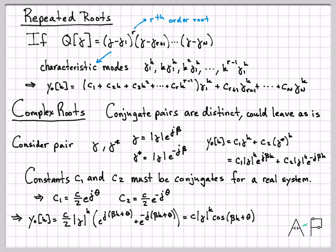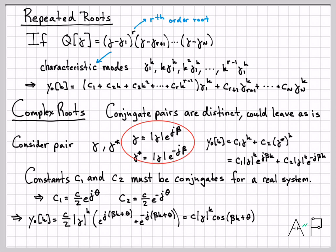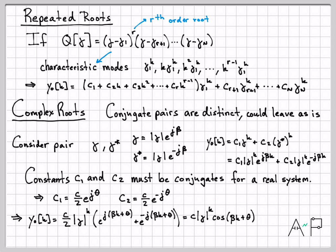To summarize: the zero-input response is a linear combination of the characteristic modes of the system, because that is the only form leading to a non-trivial solution of Q(E)·y₀(k) = 0. For distinct roots, the modes are just γ^k terms; for repeated roots, we add factors of k, k², etc.; and for complex conjugate root pairs, we group them as damped cosines. In subsequent videos we'll work through specific examples for each of these cases. Thanks for watching.